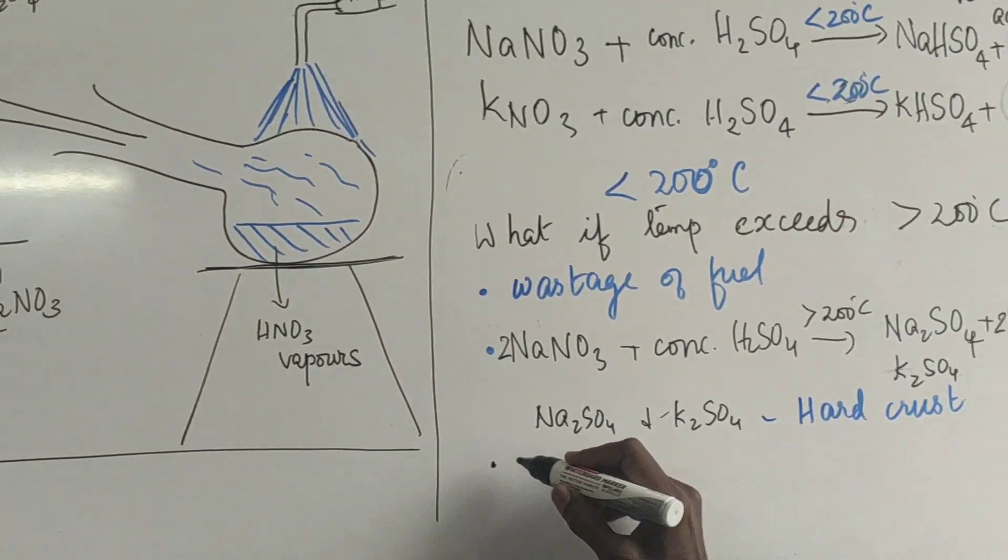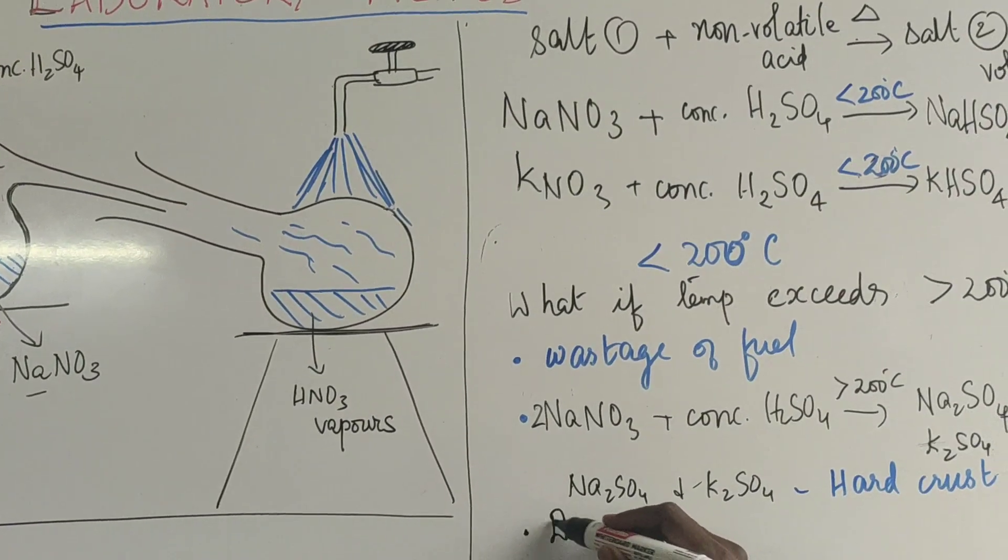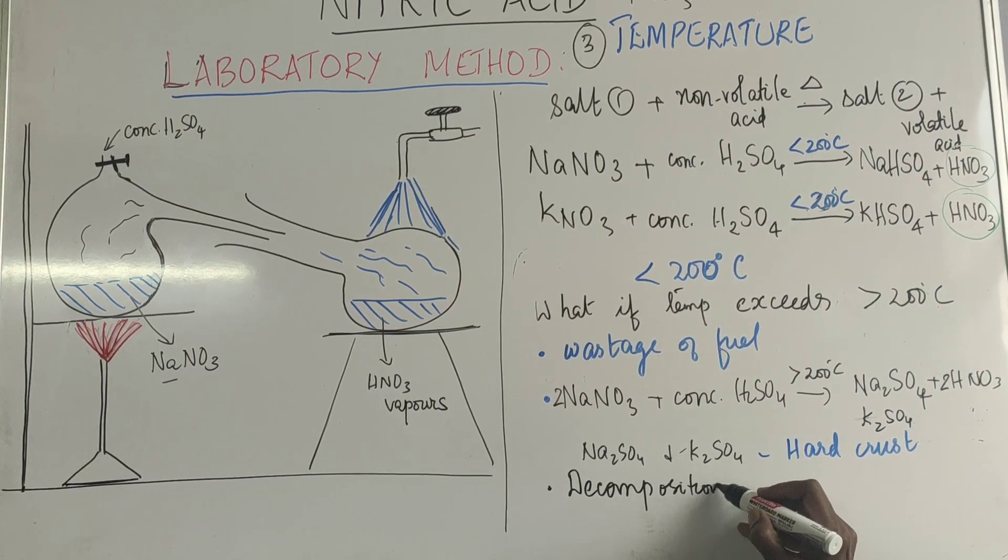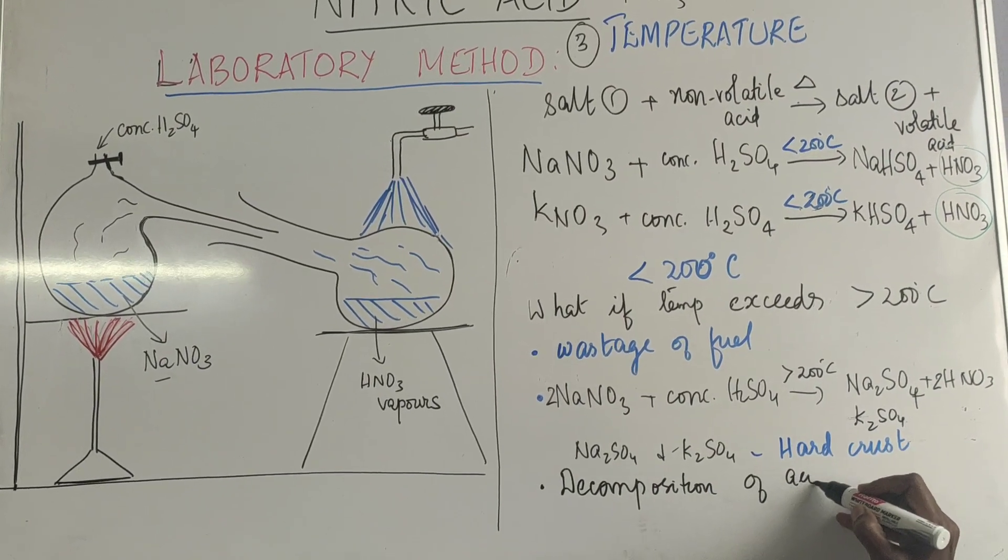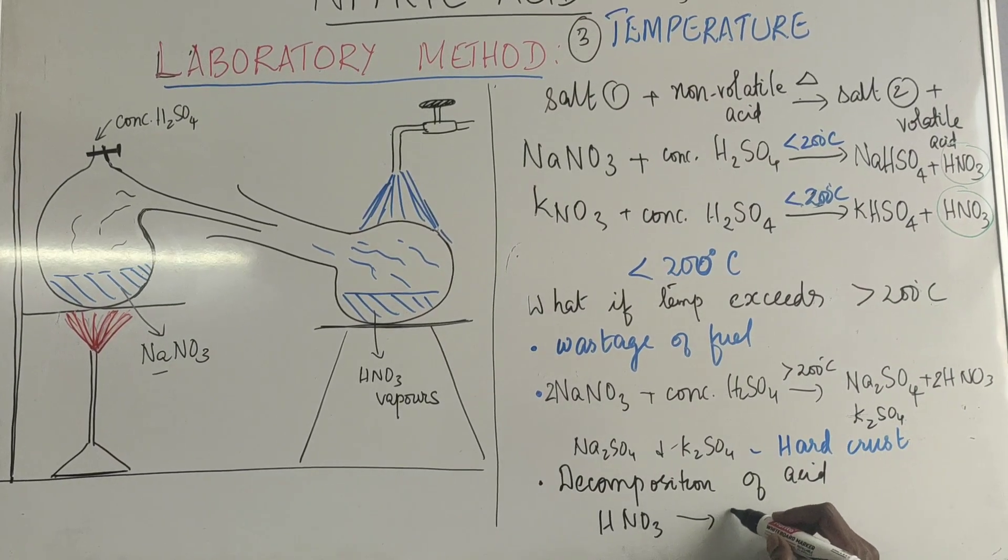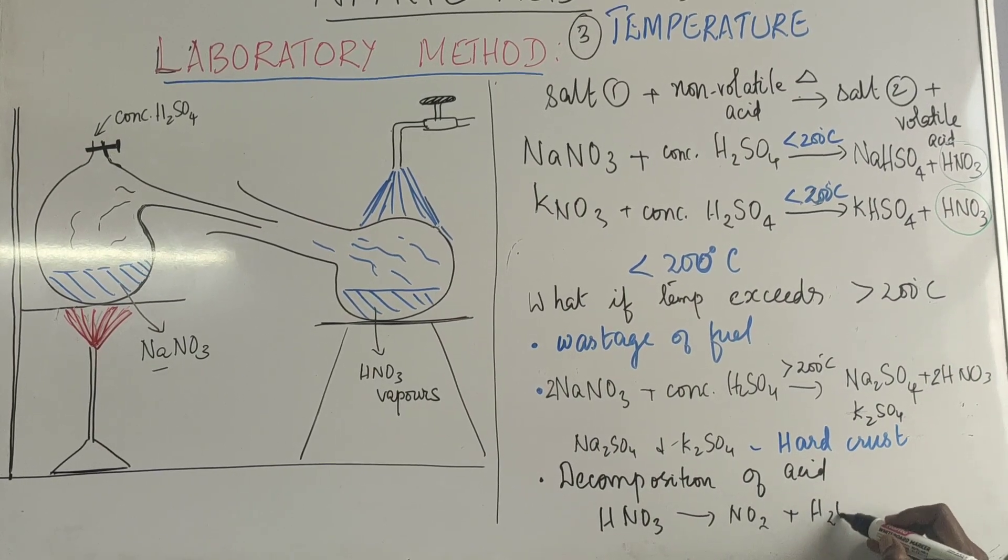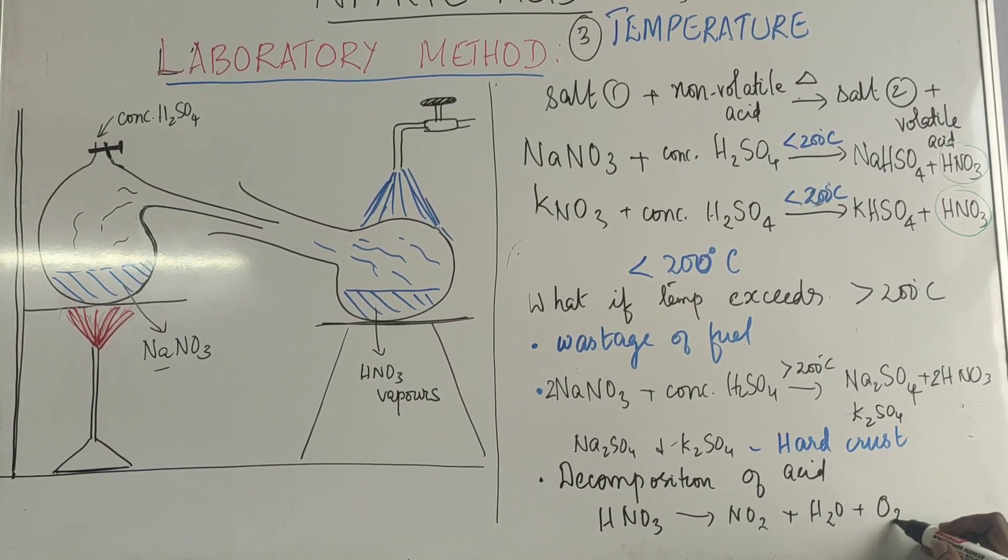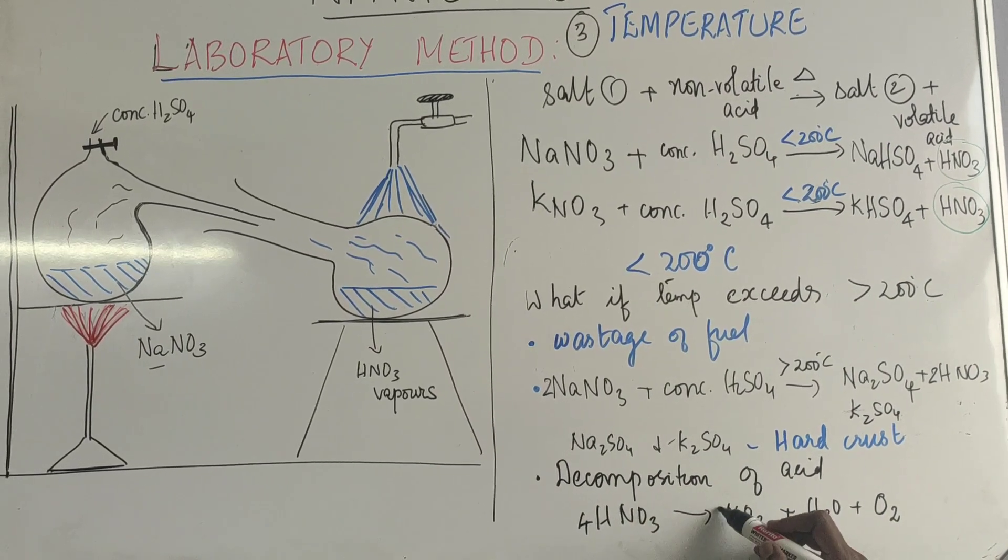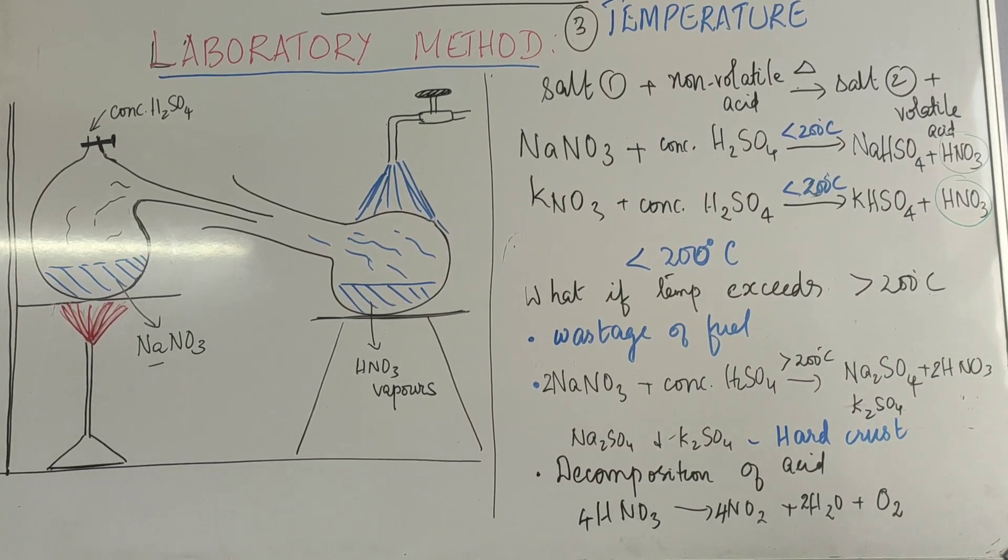The third one is, see this is a volatile acid. So when the temperature increases, it also results in decomposition of the acid. So what happens? This nitric acid breaks down to give nitrogen dioxide plus water plus oxygen. So here and to here. So decomposition happens.